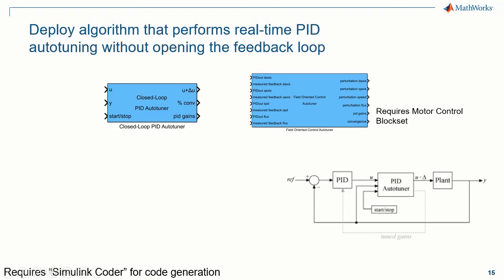Here is a visual representation of the working principle of these blocks. The PID Auto Tuner block sits between your PID controller and your physical system. When the system is operating at a steady-state operating point, this block can be triggered to conduct experiments: it injects sinusoidal perturbation signals at different frequency points into the plant and records the output. With this input-output data, it estimates a plant frequency model around the desired bandwidth and then uses this frequency model to tune your PID gains.